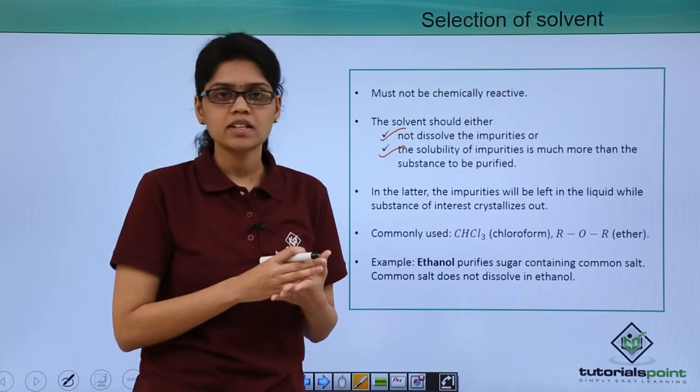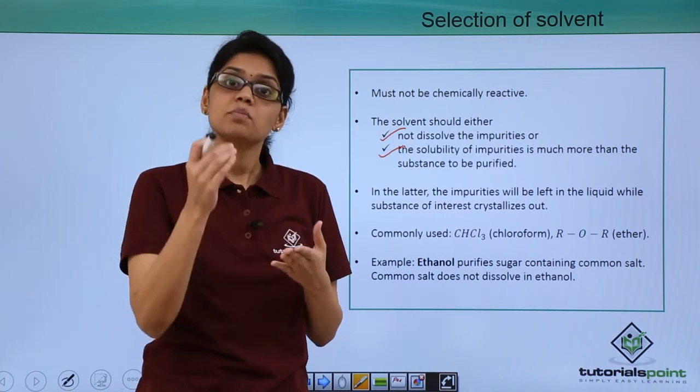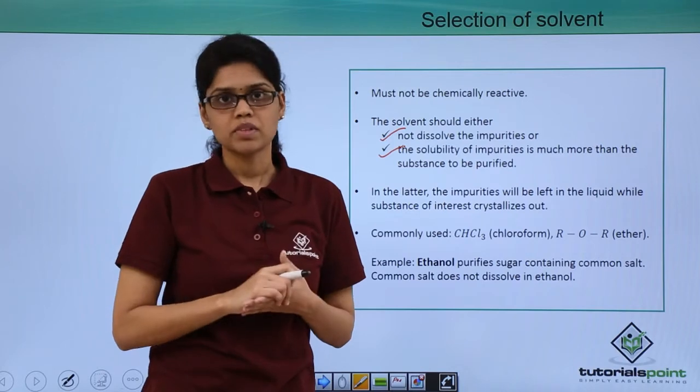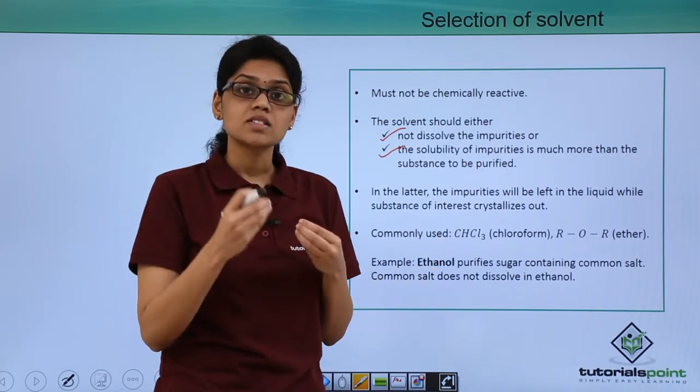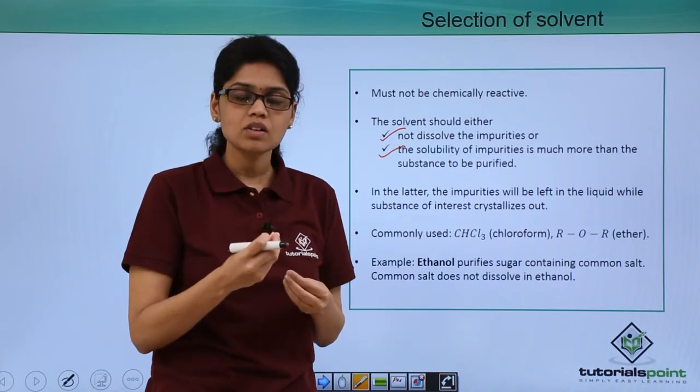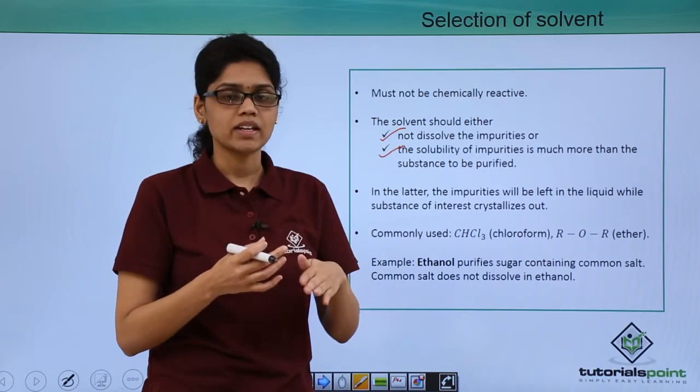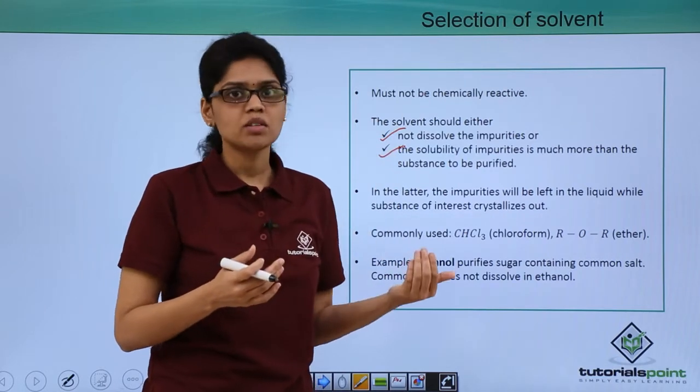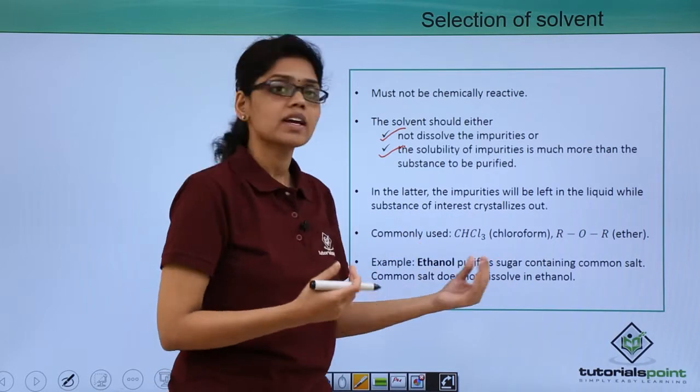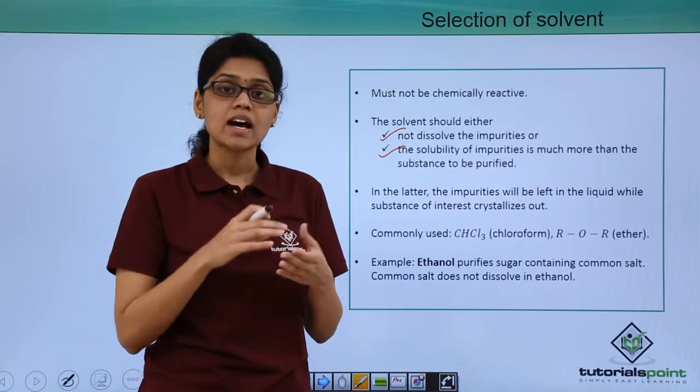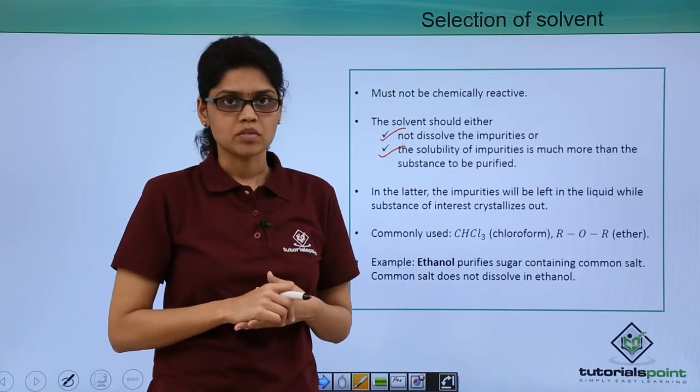To take a quick example, ethanol can be used to purify sugar from common salt. Common salt is insoluble in ethanol and sugar is only sparingly soluble in ethanol at room temperature. When this mixture is heated, the solubility of sugar increases in ethanol. When the solution is cooled again, common salt can be easily removed by filtration because it is insoluble, and sugar can be separated as it crystallizes out from the ethanol solvent.